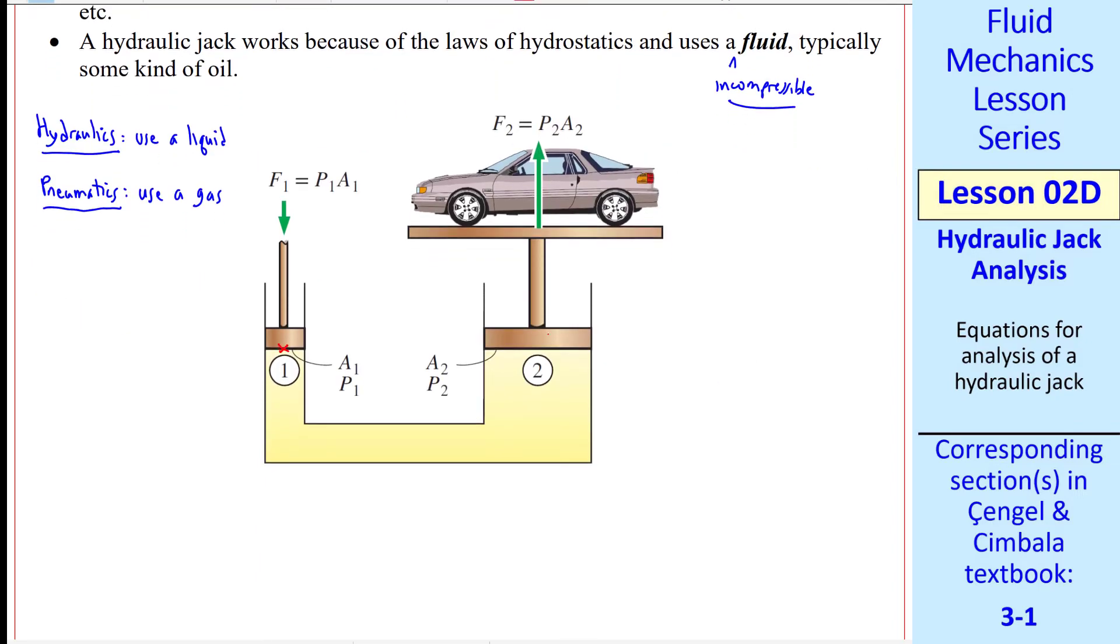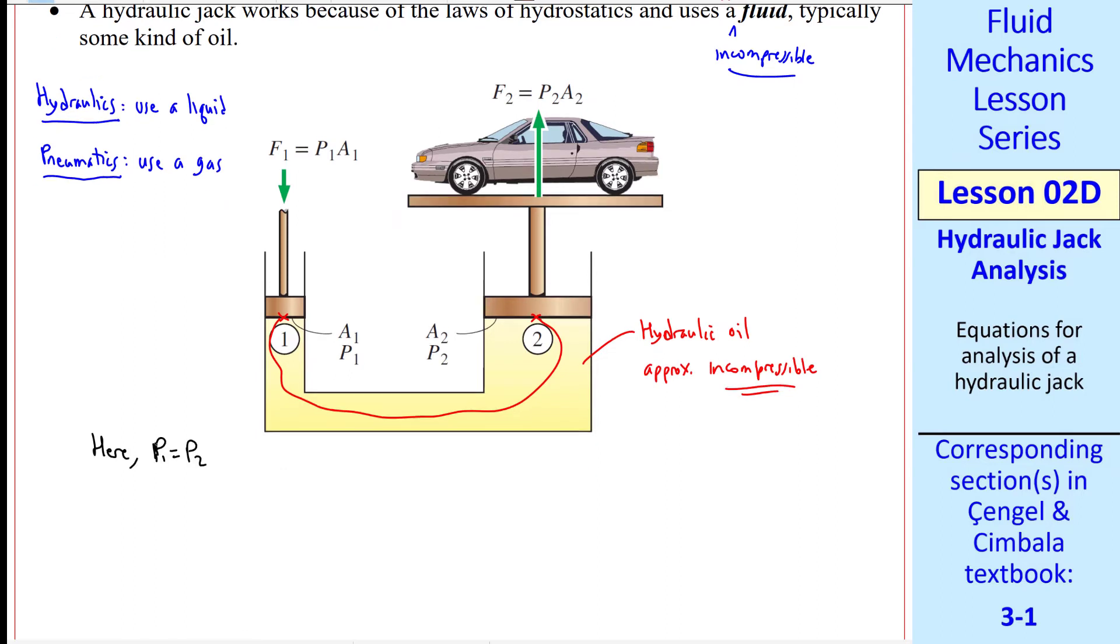So here's a sketch of a simple hydraulic jack. And we have our locations 1 and 2, just under the pistons. Again, you can draw a continuous curve from 1 to 2, so we know this is the same fluid. This is typically some kind of oil, which we call a hydraulic oil, which we approximate as incompressible. So here P1 equals P2, just as in our previous case.